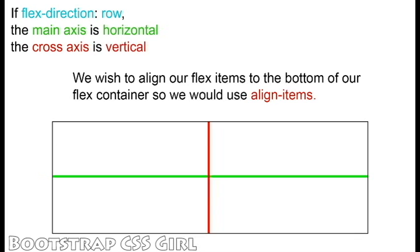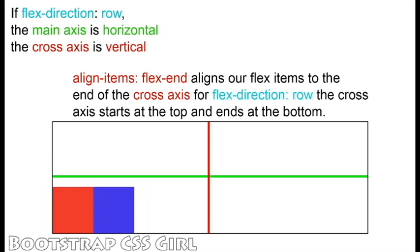Our FlexDirection is set to Row, and we would like to align our FlexItems to the bottom of our container, so we will use the AlignItems property. To align our FlexItems to the bottom, we set AlignItems to FlexEnd. This moves our FlexItems to the bottom of our cross-axis. With FlexDirection set to Row, the cross-axis starts at the top and ends at the bottom.